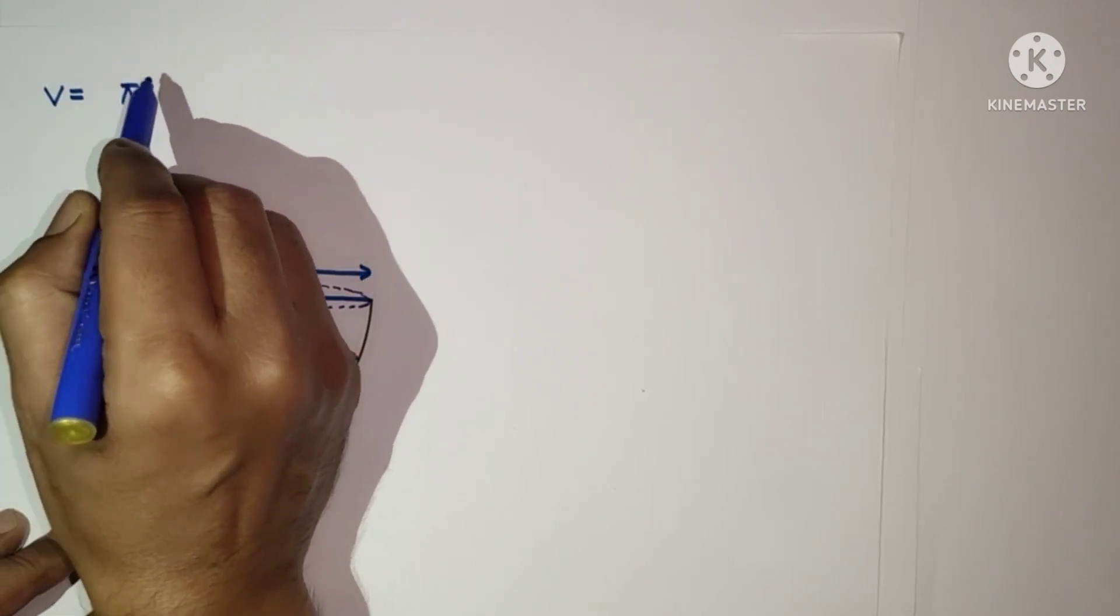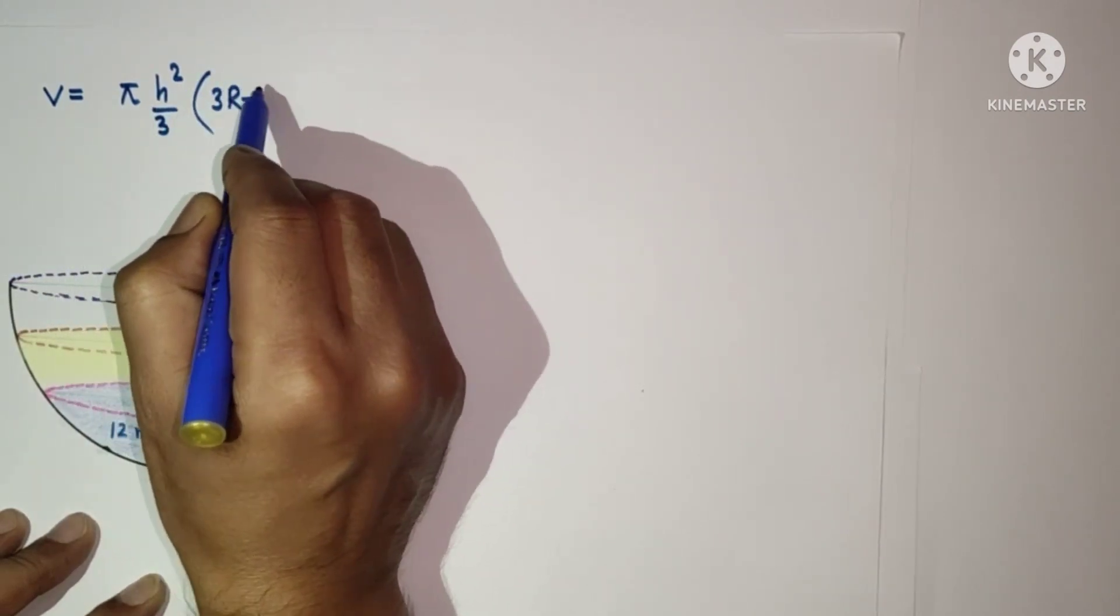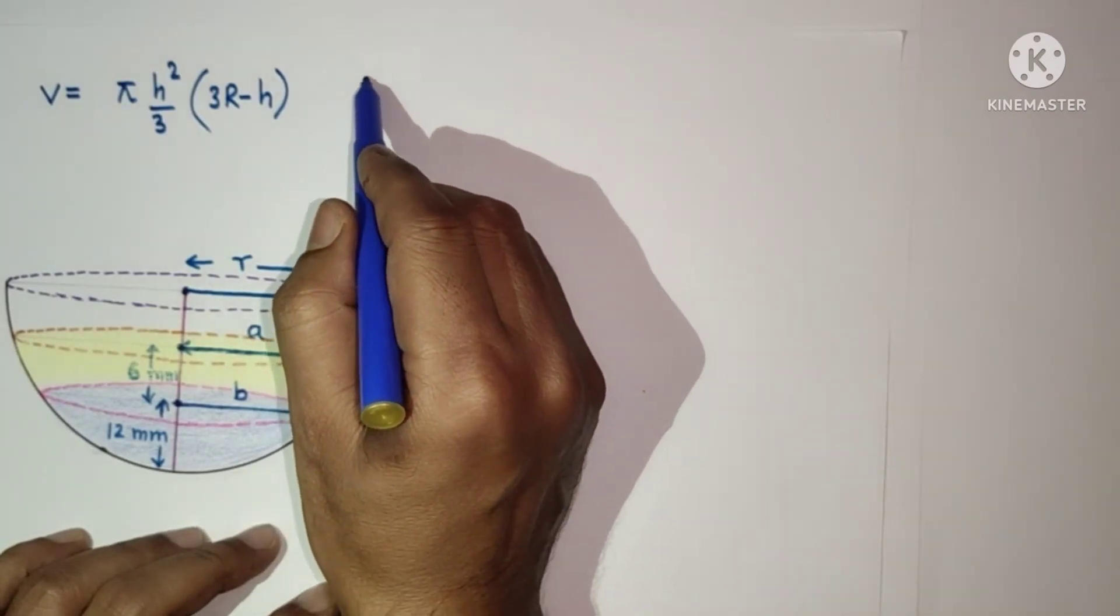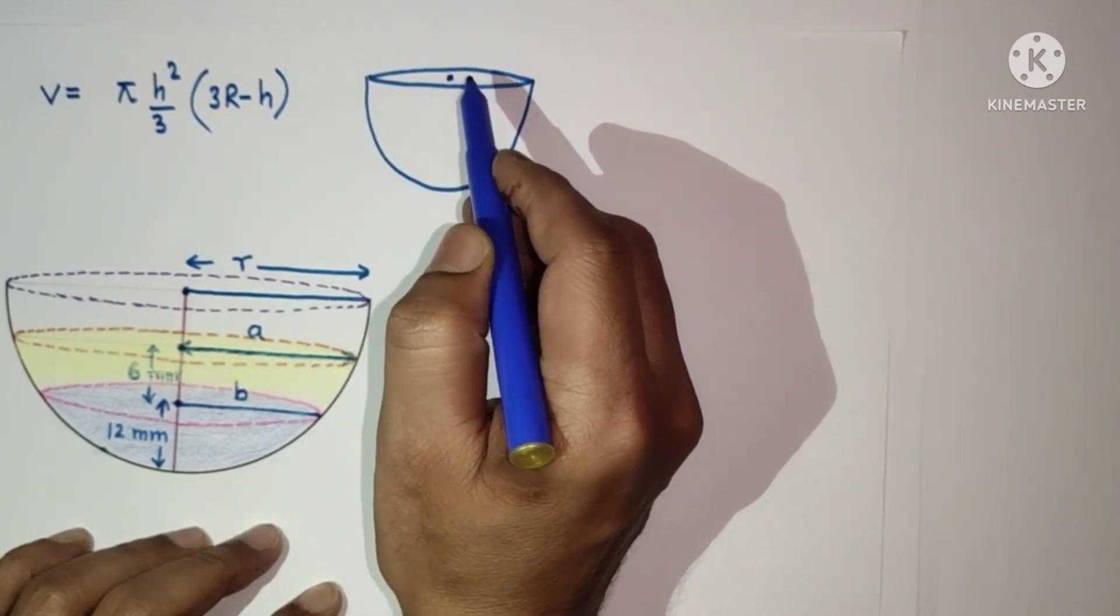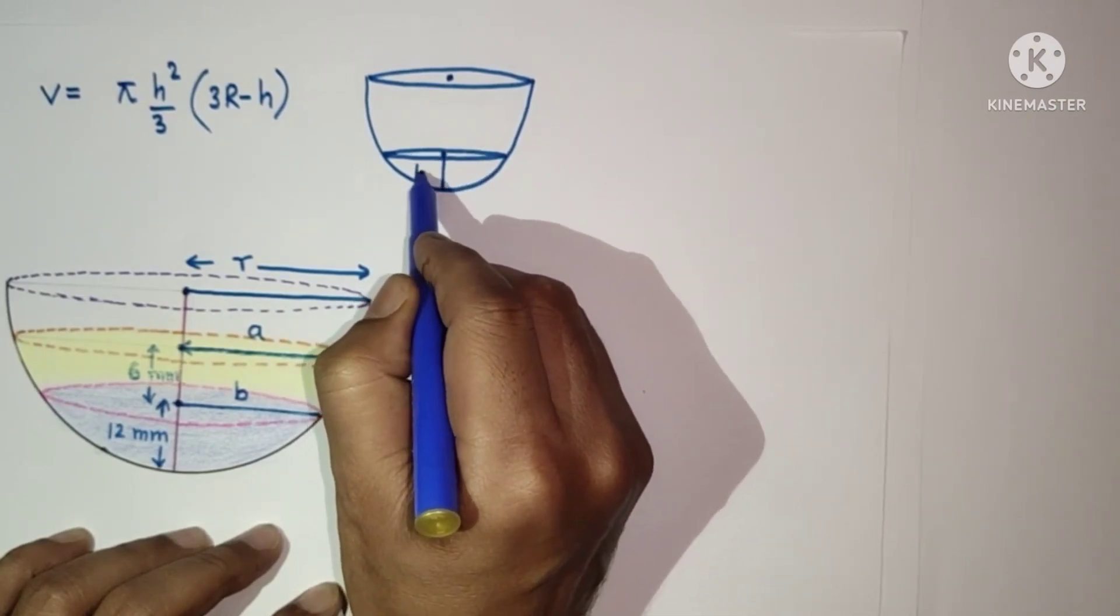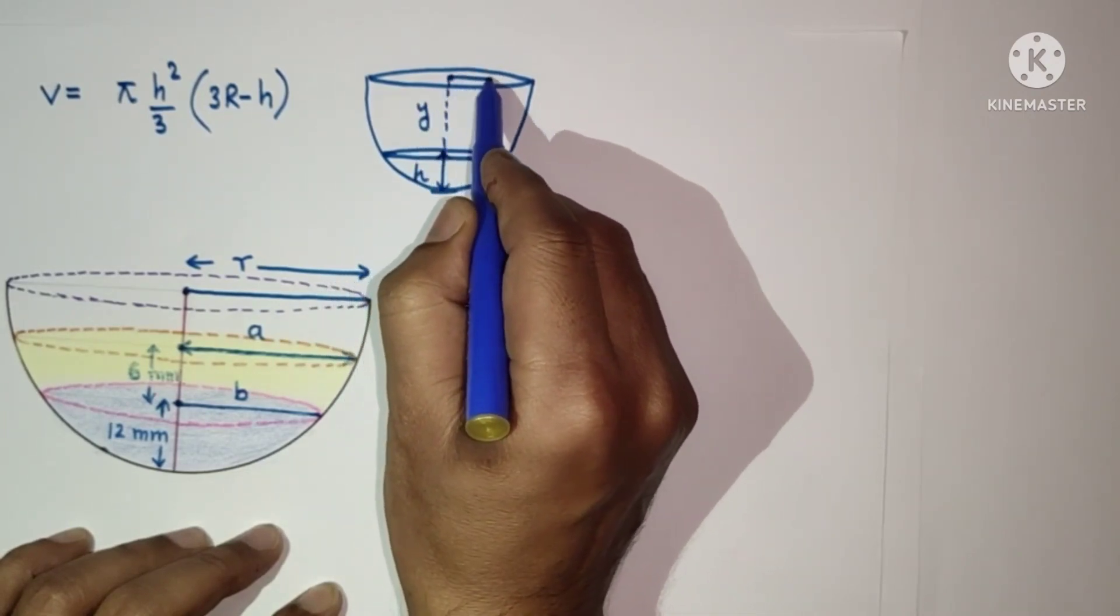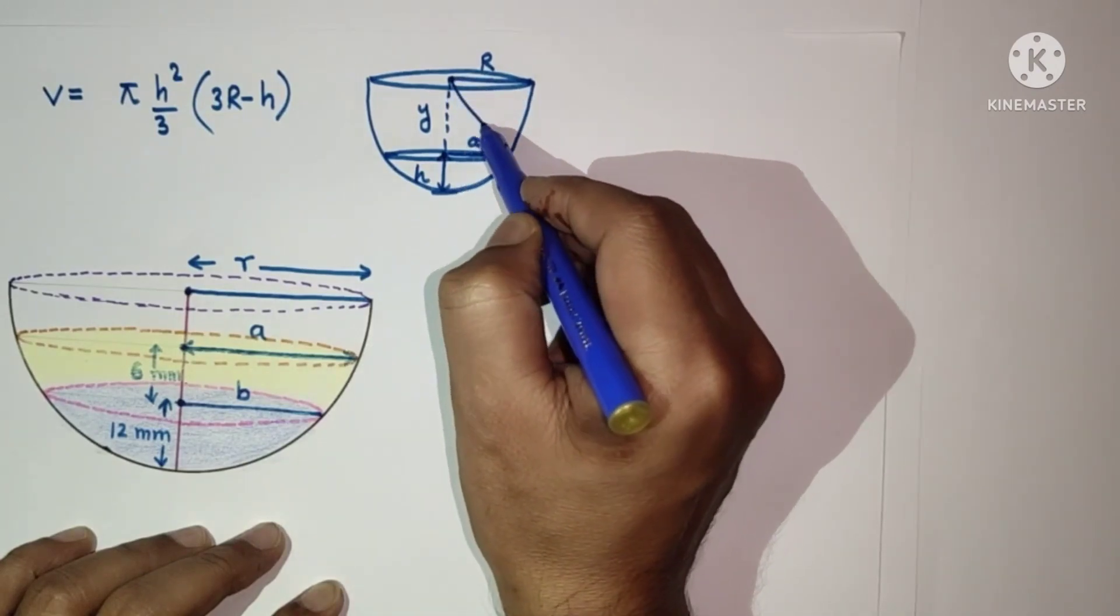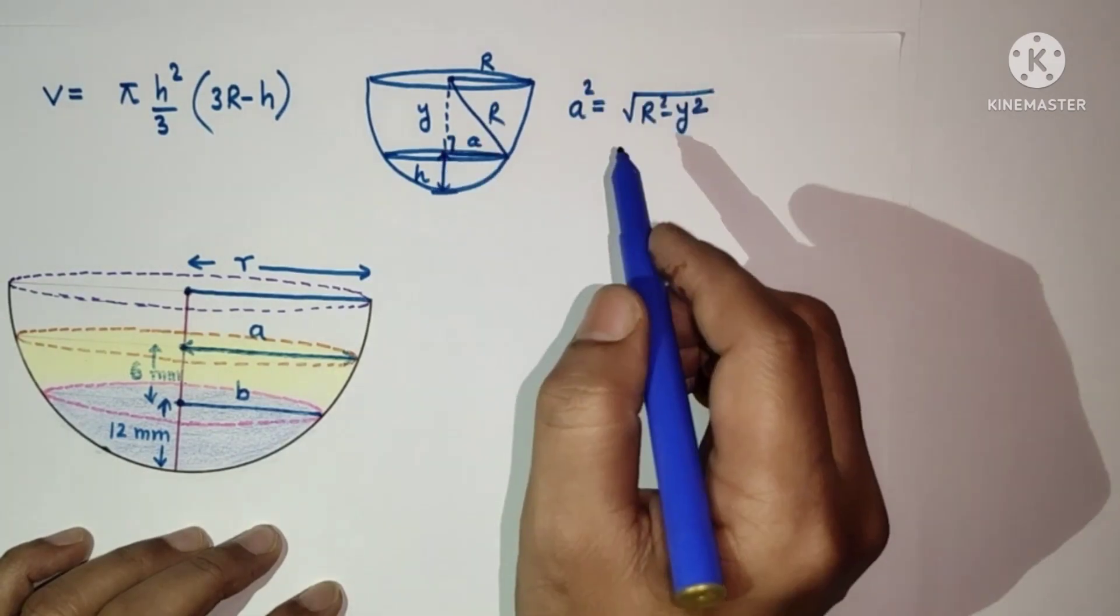We can calculate this by using definite integral. Suppose this is a hemispherical bowl and from here to here is any liquid. Suppose this is H from here to here. Let us suppose from here to here it is Y. This whole is R and this is A. Using Pythagoras theorem, we can say that A is equal to square root of R squared minus Y squared.